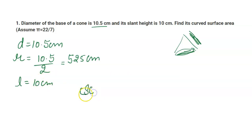So the curved surface area of cone equals pi R L, which equals 22 upon 7 into radius is 5.25 into 10.